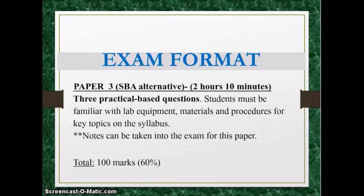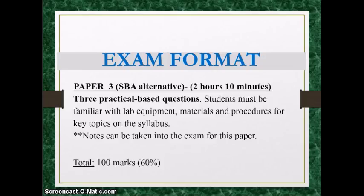Paper Three is the SBA alternative for private candidates not in school. It is two hours and 10 minutes and covers practical-based questions, so you need to be familiar with lab equipment, materials, and procedures for key topics on the syllabus. You are allowed to bring notes into the exam room for this paper. It consists of three practical-based questions worth 100 marks, which also adds 60% to your overall grade.